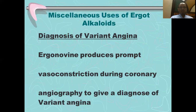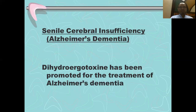This is a very risky procedure and one should be ready for any complications that may occur, including vasodilator therapy and other management of ischemic heart disease, unstable angina, and even MI. Next use of ergot alkaloids: dihydroergotoxin has been used for the treatment of Alzheimer's dementia, though the mechanism has not been clear.